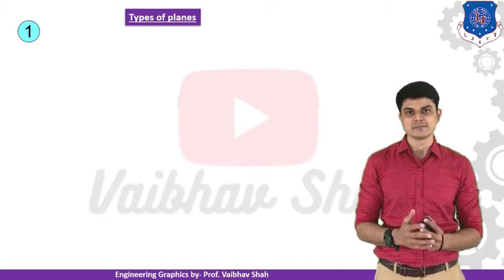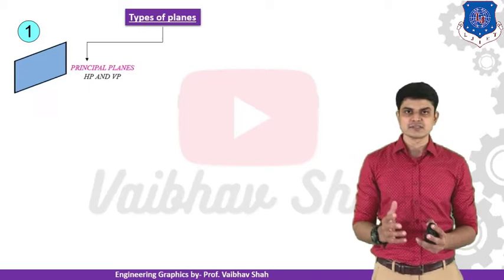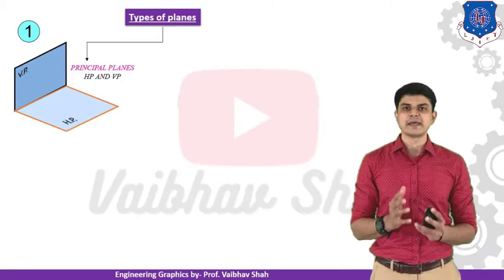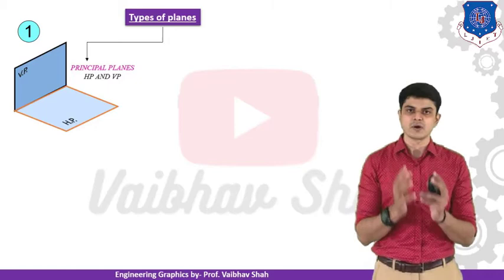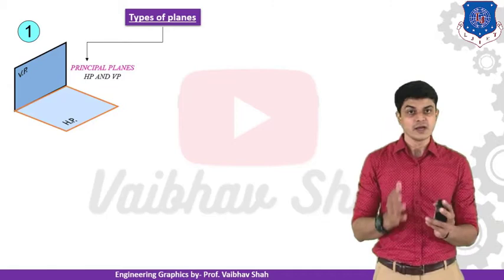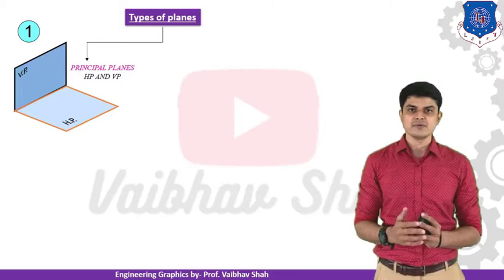There are basically two types of main planes. First, the vertical plane, and second, the horizontal plane. A horizontal plane is a plane parallel to your earth surface. A plane perpendicular to the horizontal plane is the vertical plane. These are the basic planes.